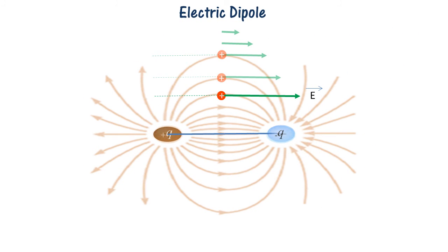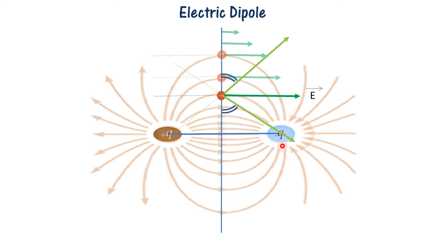As a special case, we will find the generalized value of E on the perpendicular bisector of plus Q and minus Q. We consider the forces on a point charge and find the x and y components of these forces. Since this unit positive charge is equidistant from plus Q and minus Q, and plus Q equals minus Q in magnitude, the two forces have the same magnitude. The y components will cancel each other out, and the x components give us the value of E. After some mathematical operations, we find the generalized value of E on the perpendicular bisector.